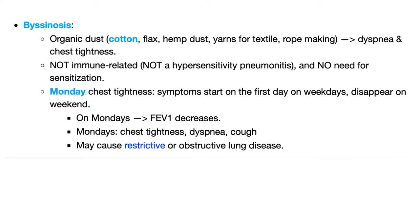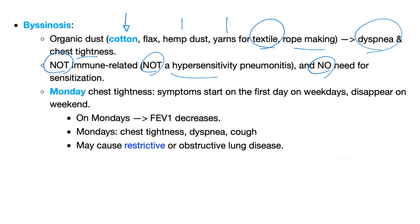Let's talk about byssinosis. Byssinosis is not immune-related — it's related to organic dust, specifically cotton or hemp dust used in textile or rope making. This is an organic dust-induced interstitial lung disease, not a hypersensitivity pneumonitis, and there is no need for sensitization. The patient presents with dyspnea and chest tightness. Symptoms start on the first day of the work week — classic 'Monday chest tightness' — and disappear on weekends. On Mondays, you'll find decreased FEV1 due to the dyspnea and chest tightness from cotton dust exposure.